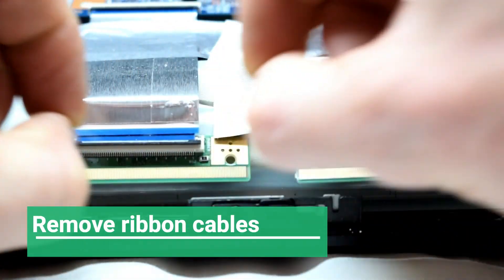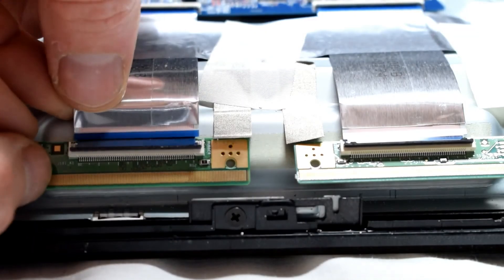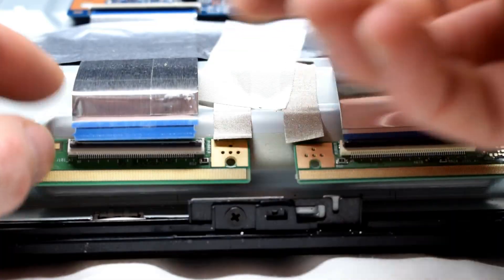Remove the ribbon cables by flipping the black tab up, and then lift up the ribbon cable.